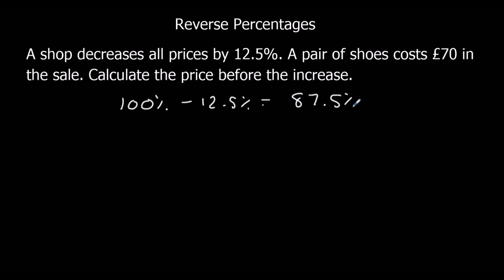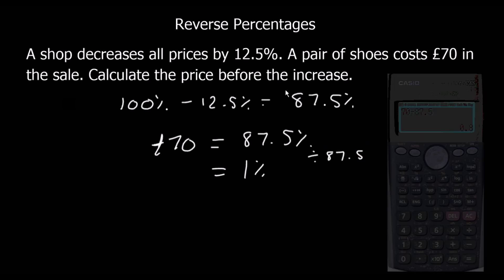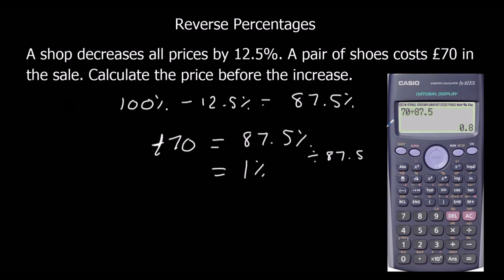So £70 is equal to 87.5%. I find 1% by dividing by 87.5. So 70 divided by 87.5 is £0.8 or 80p. And then if I times that by 100, that's going to give me £80. So the original price was £80.